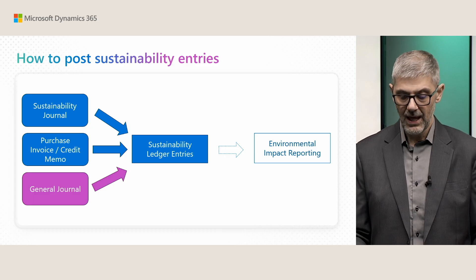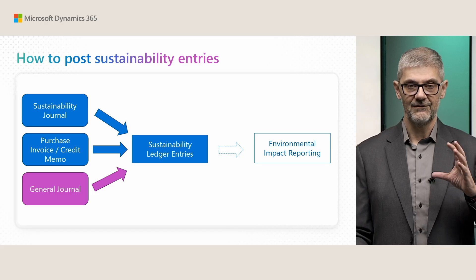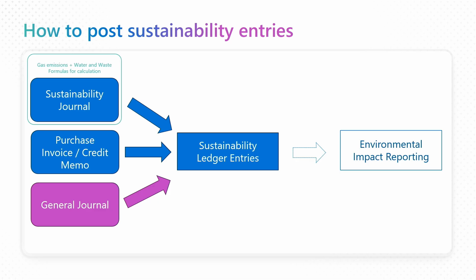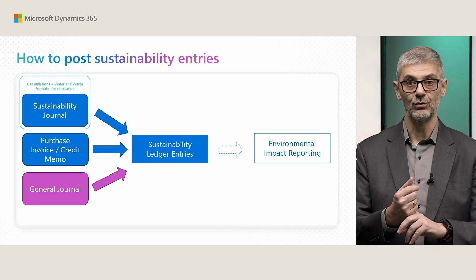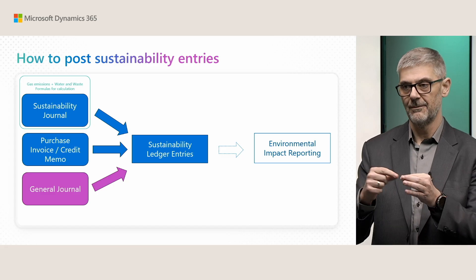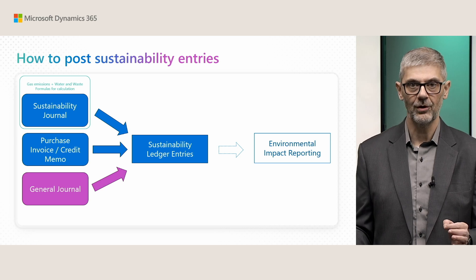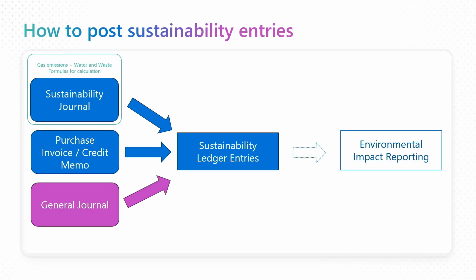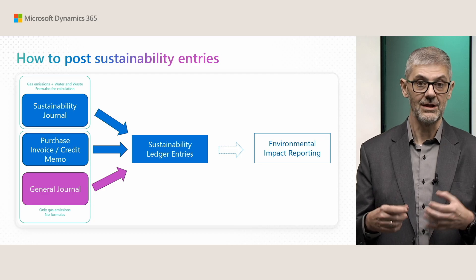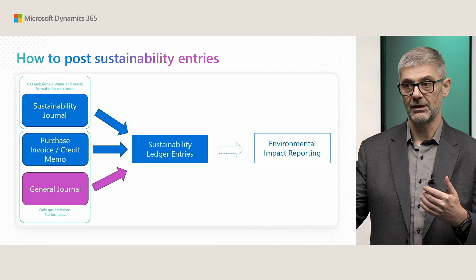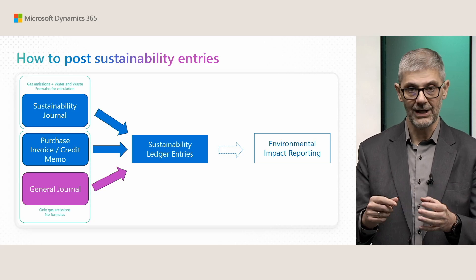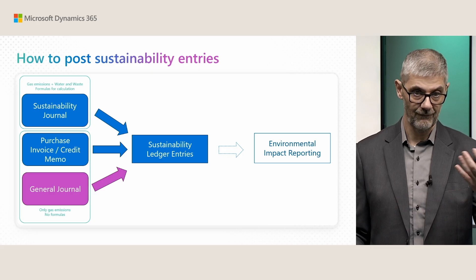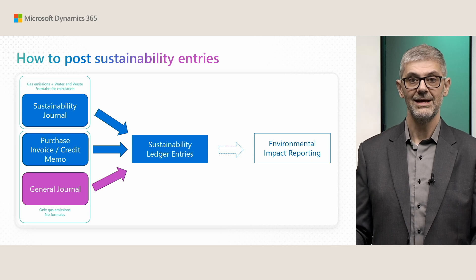On the end you can get all sustainability ledger entries so you can report all environmental impact reports. There is some differentiation between these options: in sustainability journals you have the most flexibility — you can post all three gas emissions, plus new functionality from this wave related to water and waste management. And if you do not have an exact emission value, you can use formulas to calculate your total emissions. With purchase documents and general journal, you cannot use formulas — you can post only total emissions if you already have that information from an external source. Also, at this moment you can post only greenhouse gas emissions, so no water and waste.